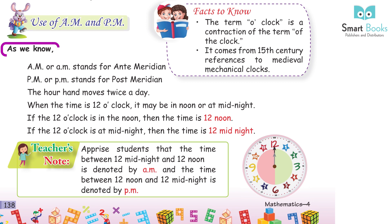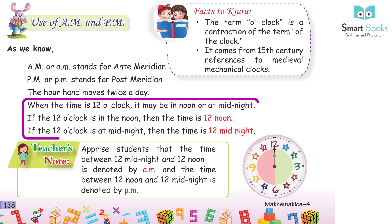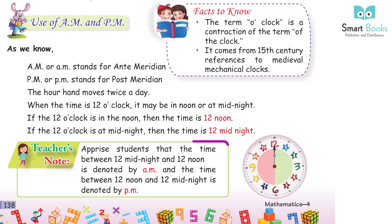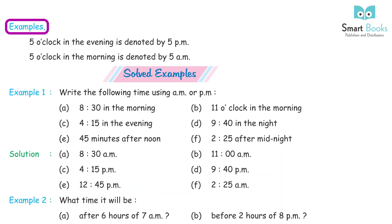Use of AM and PM: AM stands for ante-meridian and PM stands for post-meridian. The hour hand moves twice a day. When the time is 12 o'clock, it may be noon or midnight. If 12 o'clock is at noon, the time is 12 noon. If the clock is at midnight, the time is 12 midnight. The time between 12 midnight and 12 noon is denoted by AM, and between 12 noon and 12 midnight is denoted by PM.